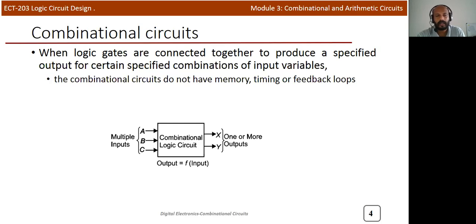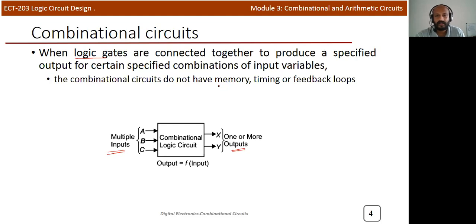Before starting the arithmetic circuit, I'll give you an idea about what I mean by a combinational circuit. A combinational circuit is a logical circuit which contains logic gates, with inputs and one or more outputs. When we discuss combinational circuits, we also mention sequential circuits — but we are not discussing those now. Unlike sequential circuits, a combinational circuit has no memory element, no timing circuit, and no feedback element. It is simply logic gate connections with two or more inputs and one or more outputs.